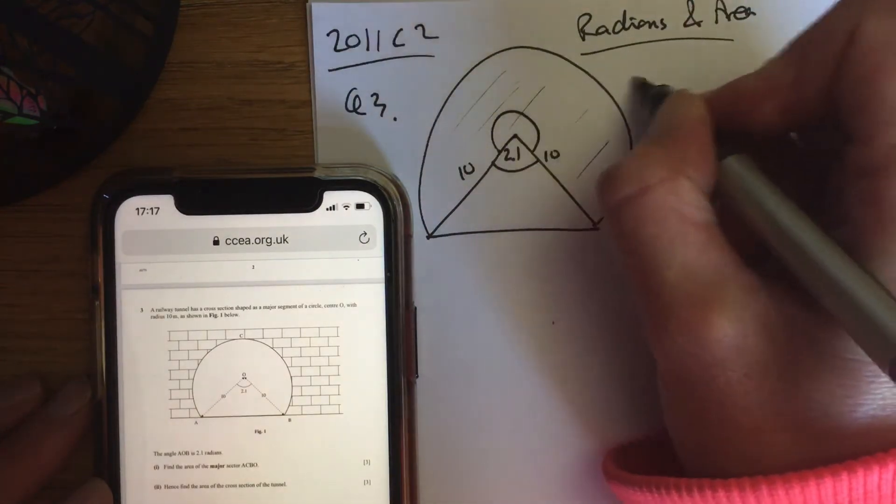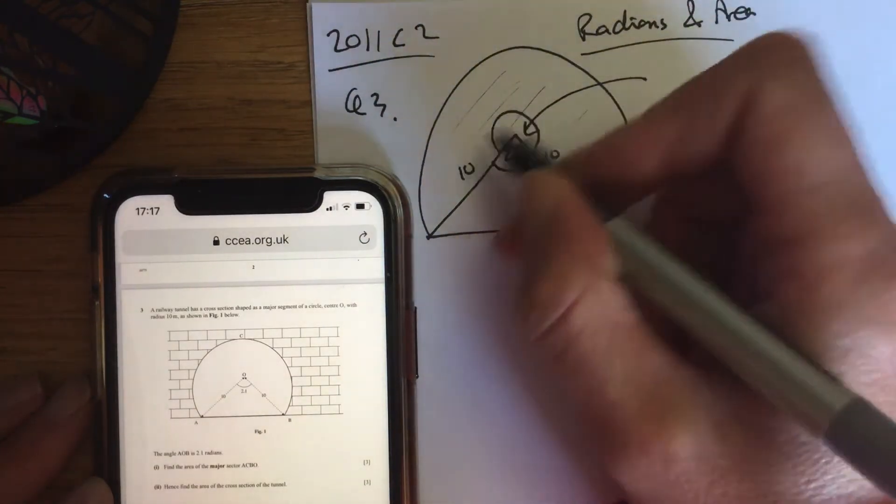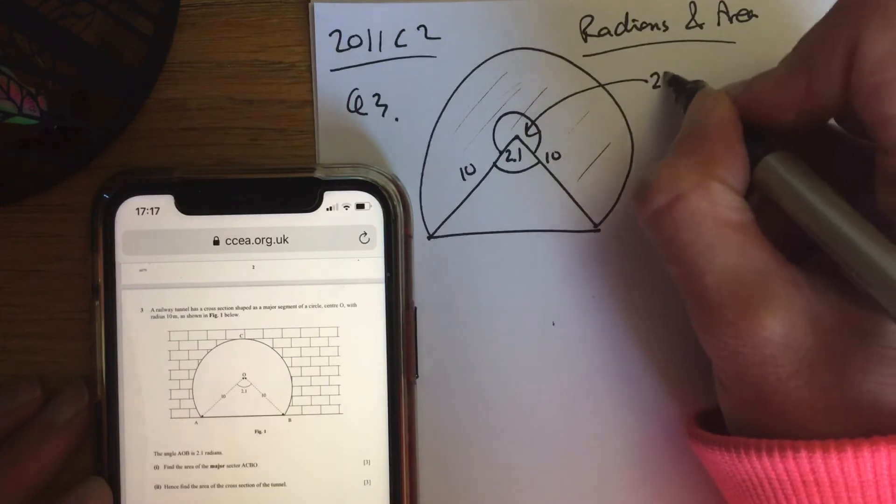First of all, I need this angle here. So 360 in radians, 2π minus 2.1.